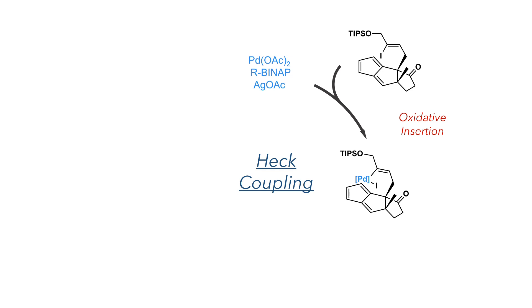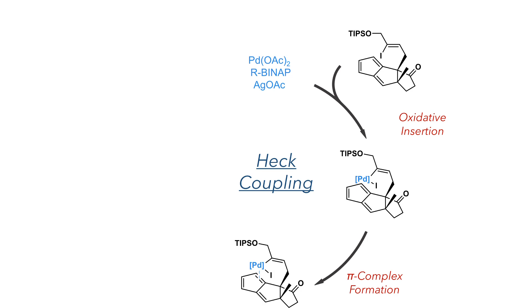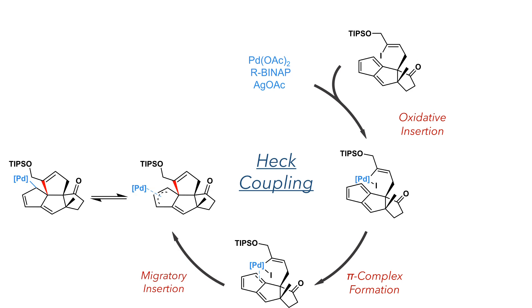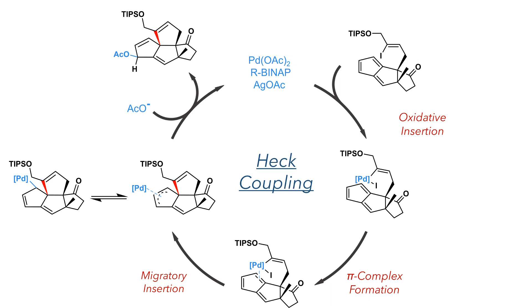In the next step, they used a Heck coupling to complete the final ring of the tetracycle. Palladium undergoes oxidative addition into the carbon-oxygen bond, which then forms a pi-complex with one of the alkenes present in the molecule. A migratory insertion occurs, forming a new carbon-carbon bond, and the palladium remains bound to the molecule in the form of an allyl complex. This is then attacked by an equivalent of acetate on the less sterically hindered convex side, which displaces the palladium to complete the product.